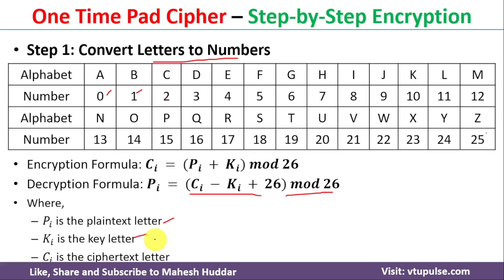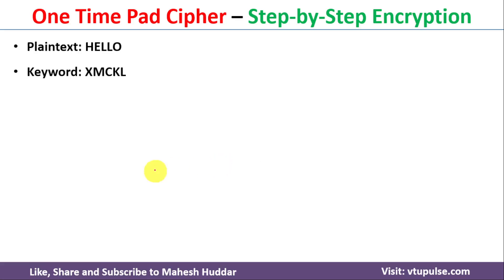We will take one simple example to understand the one-time pad cipher. The plain text is HELLO and the keyword is X M C K L.